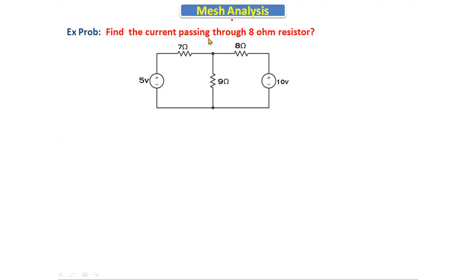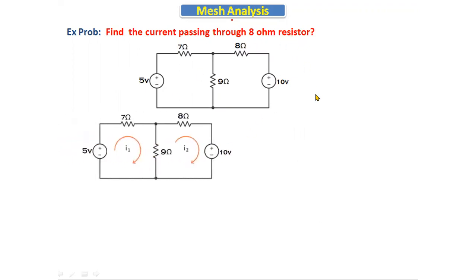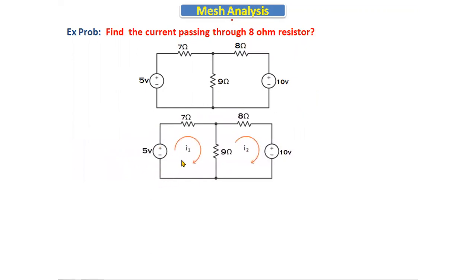Find the current passing through the 8 ohm resistor in this particular circuit. For the given circuit, I am taking the clockwise direction. Assume that in loop one, I1 current is flowing clockwise, and in loop two, I2 current is also flowing clockwise. By using the mesh analysis method, we will write the mesh equations. Apply KVL in loop one.